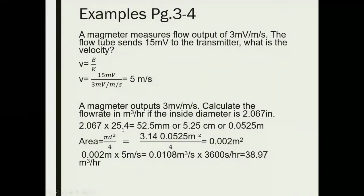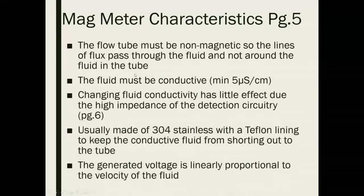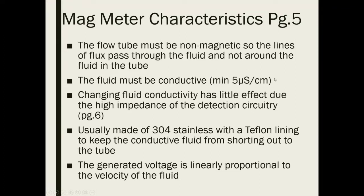Moving on to characteristics of mag meters. The flow tube must be non-magnetic so that the lines of flux pass through the fluid and not around it using the tube as a conductor. The fluid must be conductive or have a minimum conductivity — 5 microsiemens per centimeter as laid out by the ILM. This excludes almost all oil products. There's a table in the ILM showing the conductivity of certain fluids.